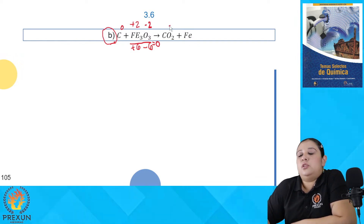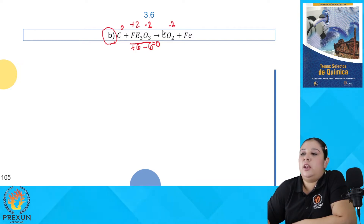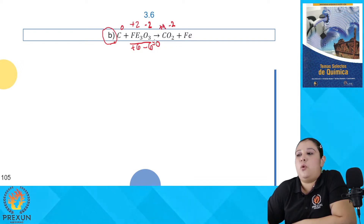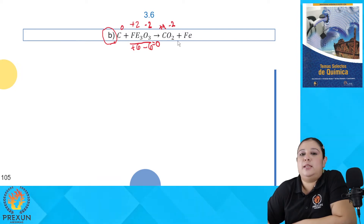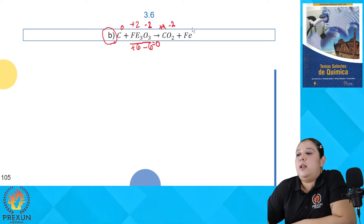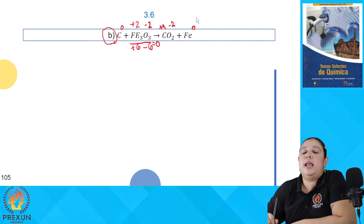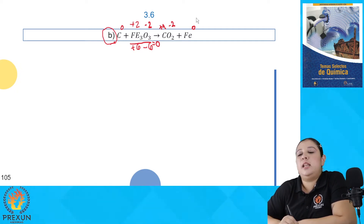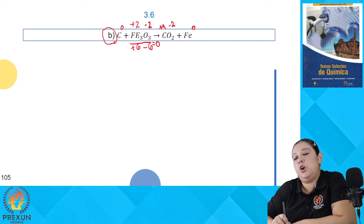Dióxido de carbono: el oxígeno siempre es menos 2; con dos oxígenos tengo 4 cargas negativas en total, entonces el carbono tiene que estar trabajando con más 4 para que la suma sea cero. El hierro en los productos ya no está como óxido, está como elemento libre, por lo tanto su número de oxidación es cero. Ya tenemos todos los números de oxidación.